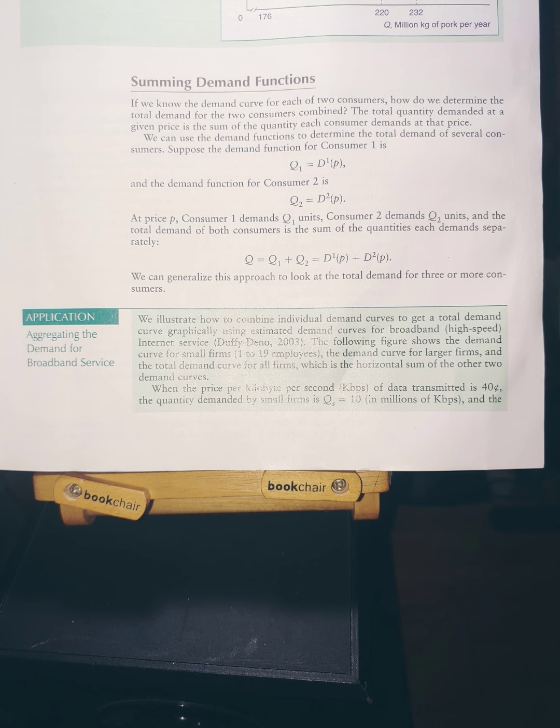We can use the demand function to determine the total demand of several consumers. Suppose the demand function for Consumer 1 is Q₁ = D¹(P), and the demand function for Consumer 2 is Q₂ = D²(P).